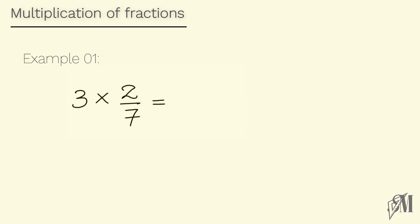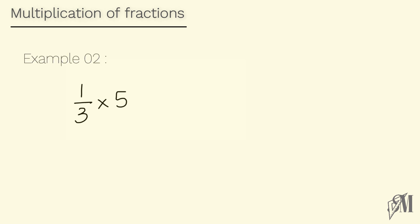When a whole number is multiplied by a fraction, we multiply the whole number by the numerator first — that is 3 into 2 equals 6. The denominator does not change; it remains 7. So our final answer is 6 over 7. The same procedure applies when a fraction is multiplied by a whole number: multiply the numerator by the whole number — 1 into 5 equals 5 — and the denominator remains 3.